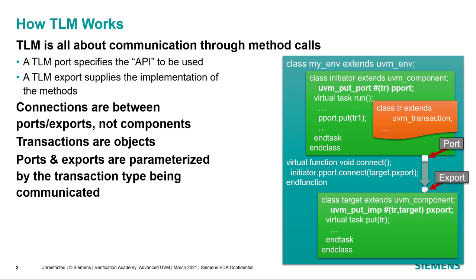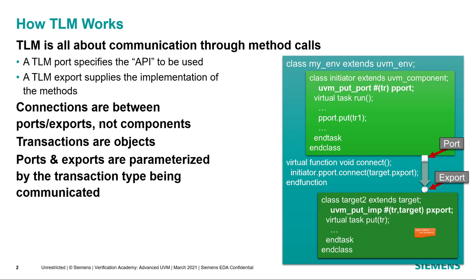Because we're making the connection from the port to the export, the factory can replace one target with another as long as it's of similar type and has the same set of interfaces. Notice that the code in the environment doesn't have to change, and we can still make the connection because it's still connecting the initiator port to the target port.